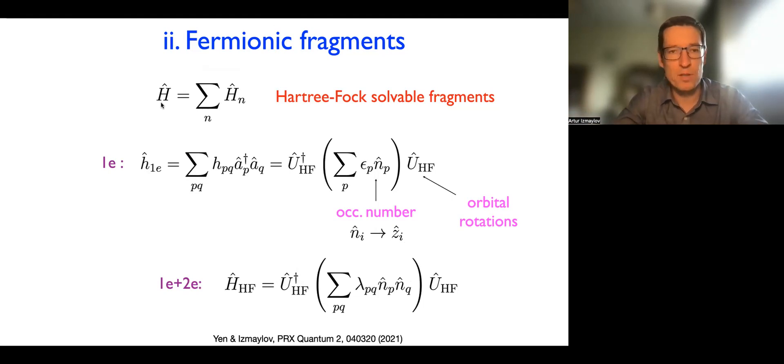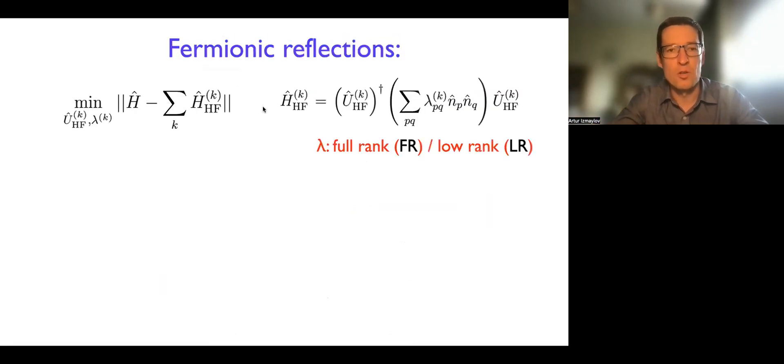And it turns out that decomposing Hamiltonian in such fragments allows you to do LCU decomposition very efficiently. So what we do, we minimize a certain decomposition, the difference between the initial Hamiltonian and the sum of such fragments. And in those fragments, we have orbital rotations that are sort of hiding the occupation number quadratic forms.